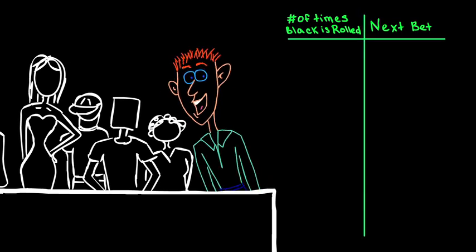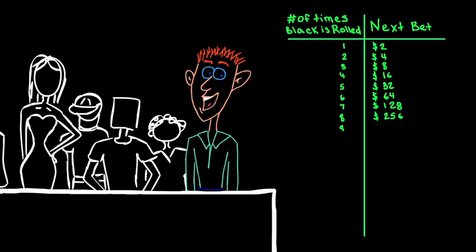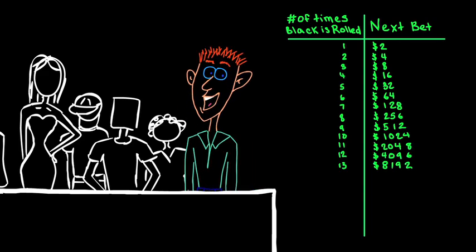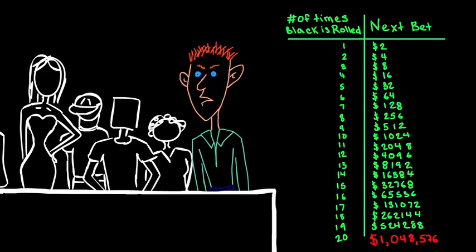So what are we missing here? Well first, we may need to place enormously large bets. Imagine we have 20 blacks in a row. If that's the case, our next bet is over a million dollars. We need more than just the willingness to make such a large bet. We actually need the money for the bet.